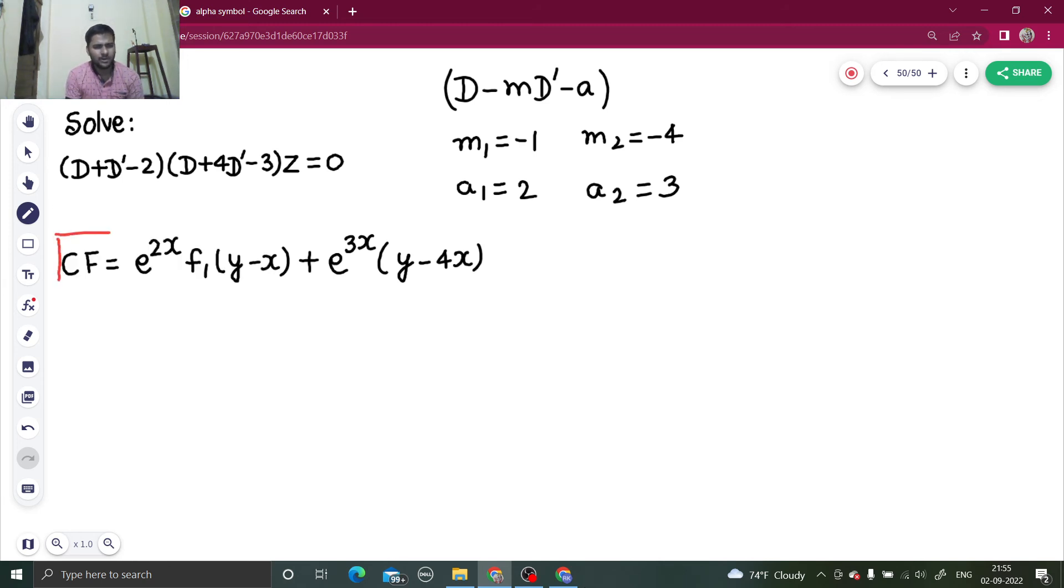Only thing I was telling - find the value of m1, a1, m2, a2. If other factors are also there, then m3, a3. And simply write your complementary function which is of the form e power ax f1(y plus m1x) plus e power a2x f2(y minus 4x). This is your complementary function.